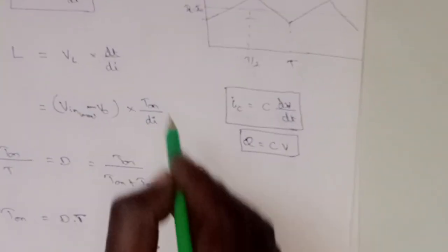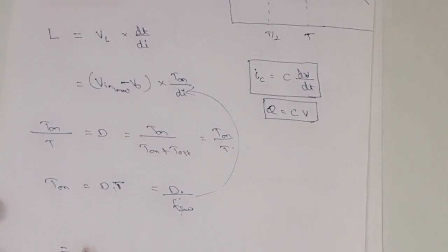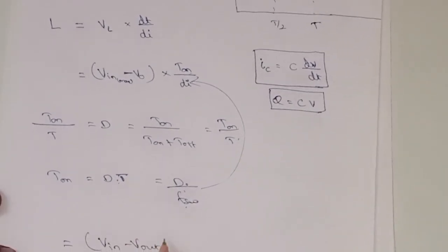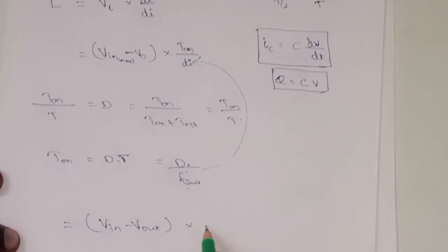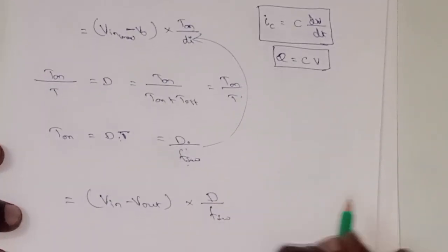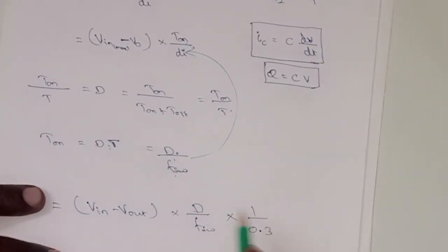So replacing here to this value, we rearrange this value to here. That means VIN minus VOUT into D duty cycle divided by switching frequency into ripple current, and di is nothing but 1 by 0.3.